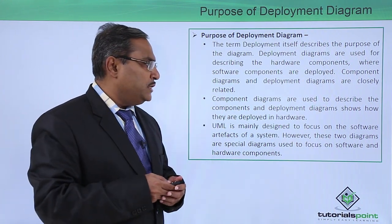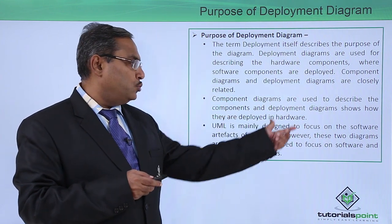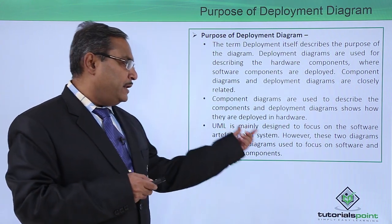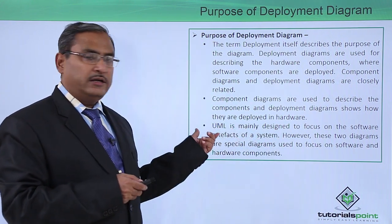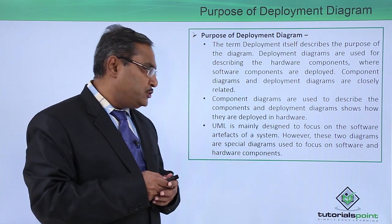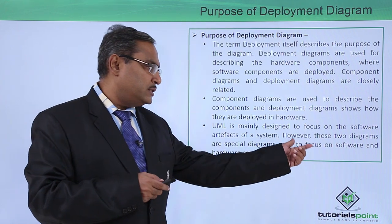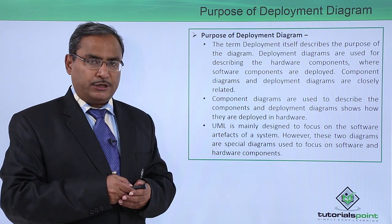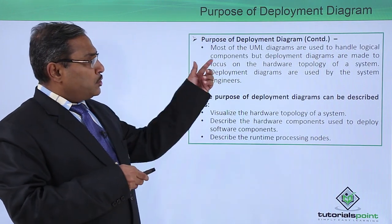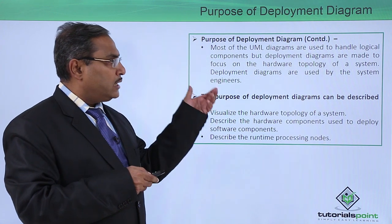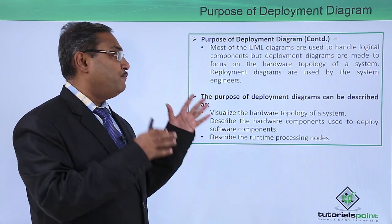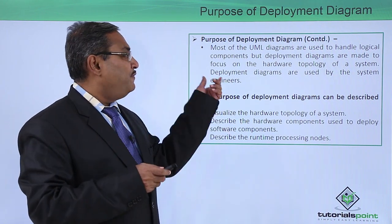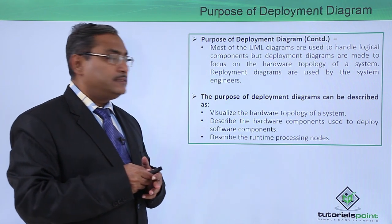Component diagrams are used to describe the components, and deployment diagrams show how they are getting deployed onto different hardware. UML is mainly designed to focus on the software artifacts of a system. However, these two diagrams are special diagrams used to focus on both the software and hardware components required for the implementation of the application. Most UML diagrams handle logical components, but deployment diagrams are made to focus on the hardware topology — that is, the connectivity of a system — and are used by system engineers.